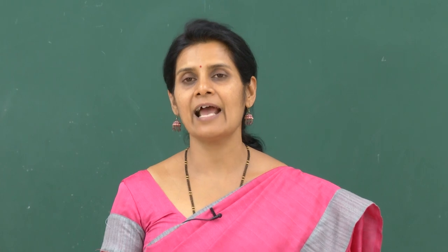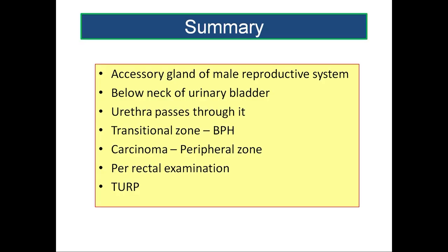To summarize: the prostate is an accessory gland of the male reproductive system — a fibromusculoglandular organ situated below the neck of the urinary bladder. The urethra passes through it, and that part is called the prostatic urethra. It has a transitional zone prone for benign prostatic hypertrophy and a peripheral zone prone for carcinomatous change. The prostate can be easily examined by per rectal examination, and the commonly used procedure for its removal is transurethral resection of prostate — TURP. Thank you.